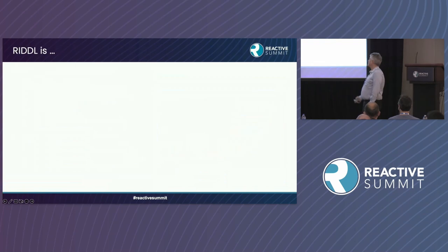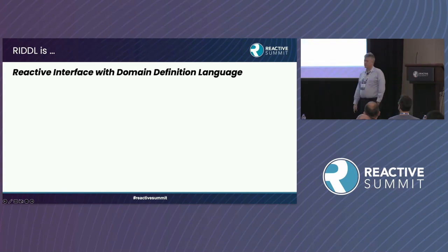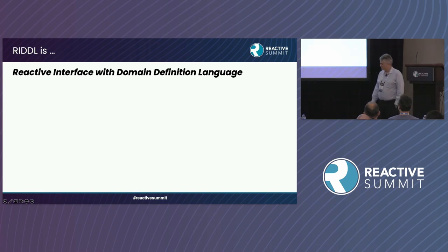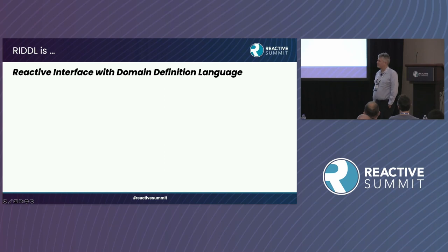So what is RIDDLE? It's an acronym that stands for Reactive Interface with Definition Domain Definition Language. I came up with that at the very beginning and it's stuck — I may rename it someday, but it seems to be okay.